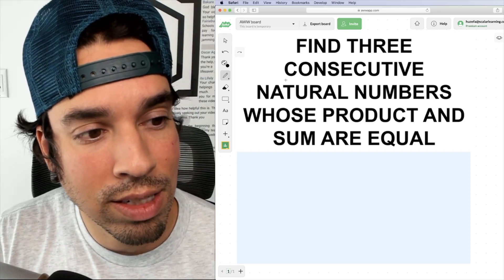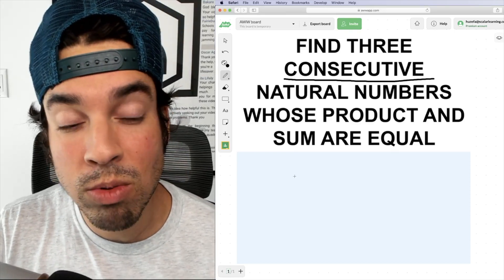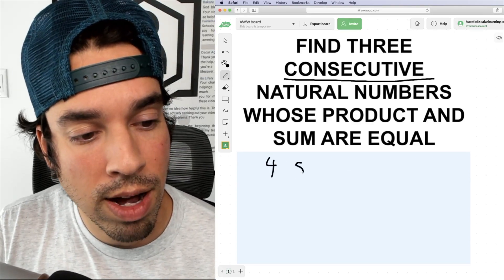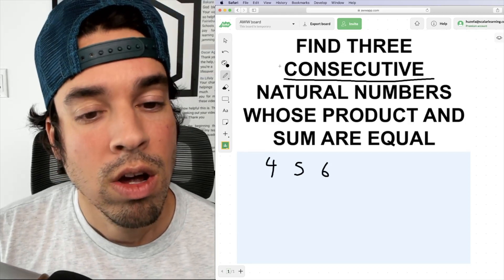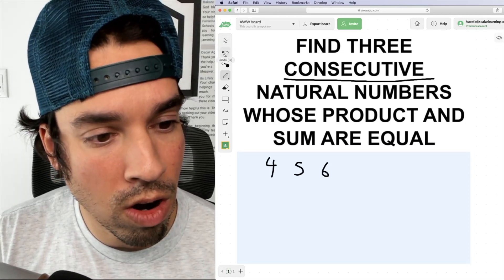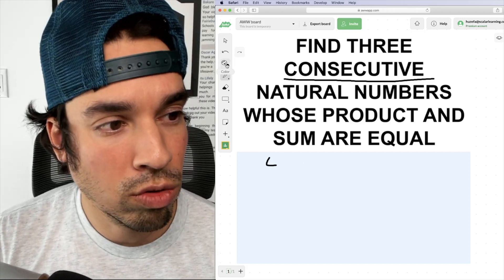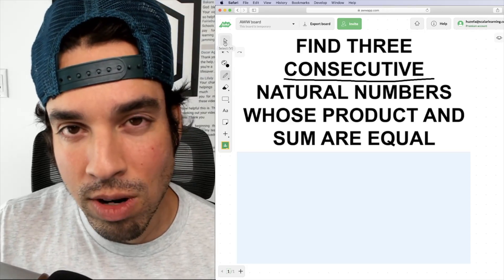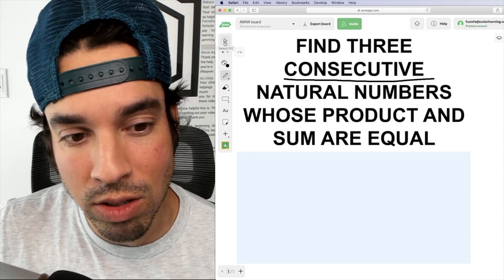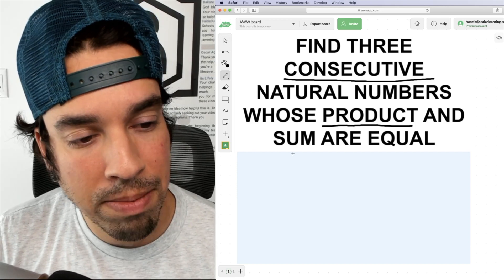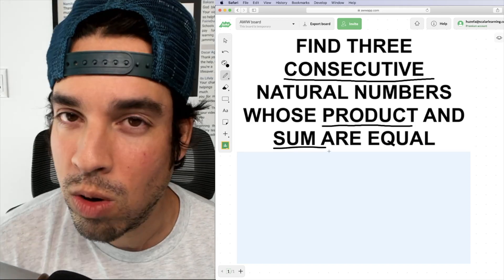So we need to find three consecutive natural numbers, meaning numbers in a row, like four, five, and six, so on and so forth, whose product and sum are equal. So these three natural consecutive numbers when you multiply them together, that's product, it's gonna be the same as the sum when you add them all together.